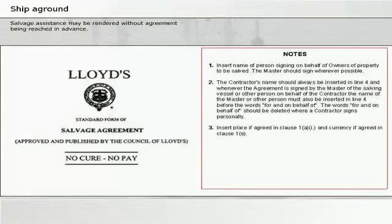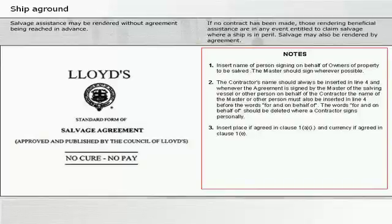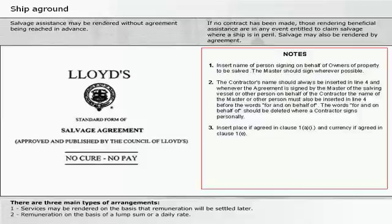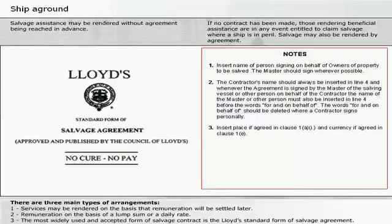Salvage assistance may be rendered without agreement being reached in advance. If no contract has been made, those rendering beneficial assistance are in any event entitled to claim salvage where a ship is in peril. Salvage may also be rendered by agreement. There are three main types of arrangements: 1. Services may be rendered on the basis that remuneration will be settled later. 2. Remuneration on the basis of a lump sum or a daily rate. 3. The most widely used and accepted form of salvage contract is the Lloyd's standard form of salvage agreement.